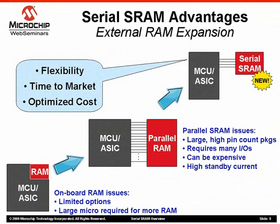Microchip now provides Serial SRAM, which represents another way to introduce off-chip RAM into a design. The connection to the micro is the classic SPI interface, which is well understood and easy to design with, especially since many micros already have an SPI interface port. As shown here, it only requires four I/O pins. It is very easy to add up to 32K bytes to a design with one small 8-lead SOIC or TSSOP package. Serial SRAM is very well suited to embedded designs due to its very low standby current.